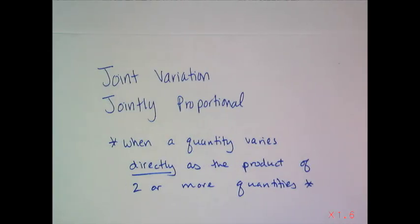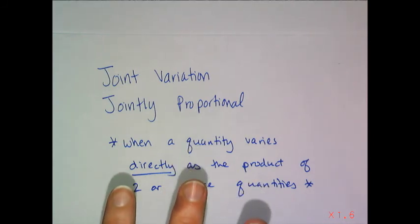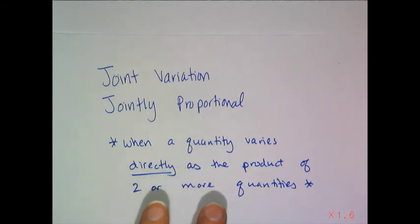Now for something new when it comes to variation. You saw the baby version of direct and inverse variation in algebra one, but I never mentioned joint variation or things that were jointly proportional. When you add the word joint or jointly into variation, what you're dealing with is more than two variables. There's not just an independent and a dependent, but a third or fourth or fifth variable involved. Whenever you hear this phrase, you are looking at a quantity that varies directly as the product of two or more other quantities.